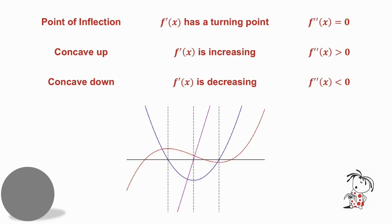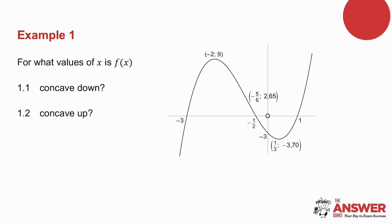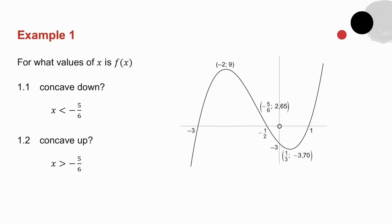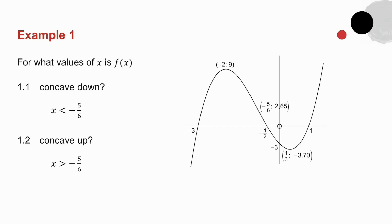You might want to pause the video and write those down. In example number one, I've drawn a graph and I ask for what values of x is f(x) firstly concave down and secondly concave up. Where is the graph concave down? Concave down means the tangent line lies above the graph, and that occurs when x is less than −5/6. Where is it concave up? That occurs when x is greater than −5/6.